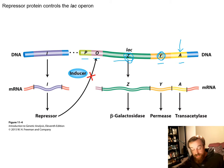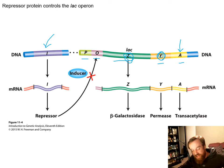Upstream, in a different location not under the same promoter and operator, is the lacI repressor gene. This lacI gene is responsible for regulating the lac operon. It makes sense that the repressor would not be under the same promoter and operator, because it has to be continuously transcribed to ensure the lac operon is properly regulated — it can't be tied to that same transcription.